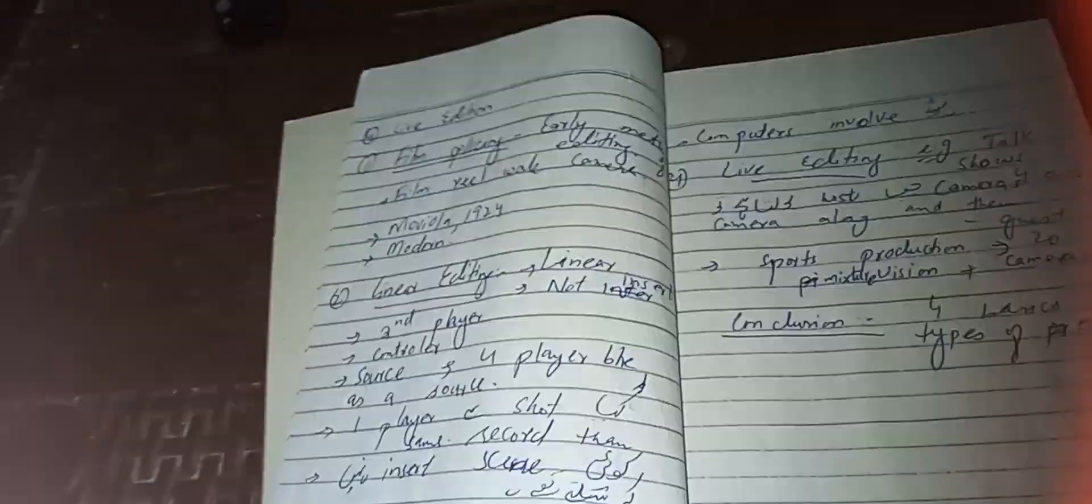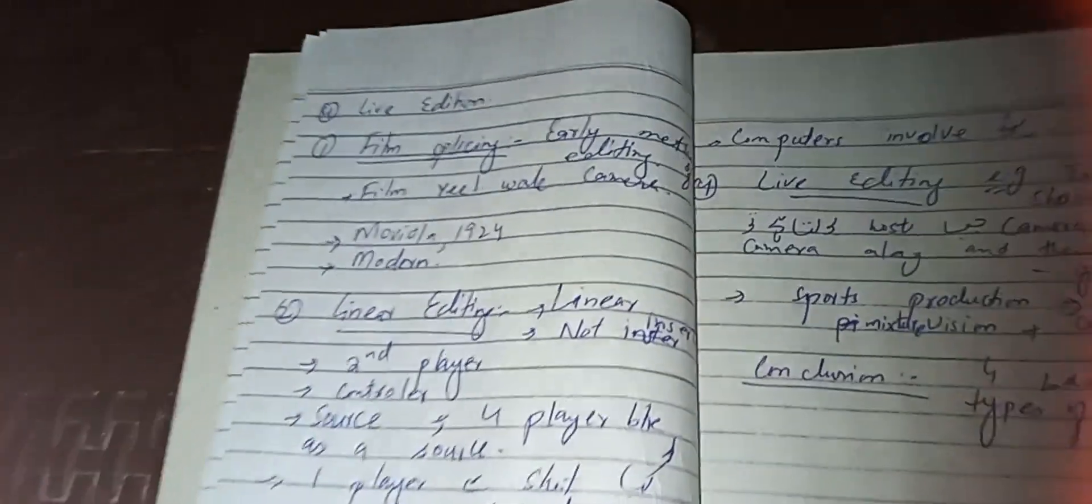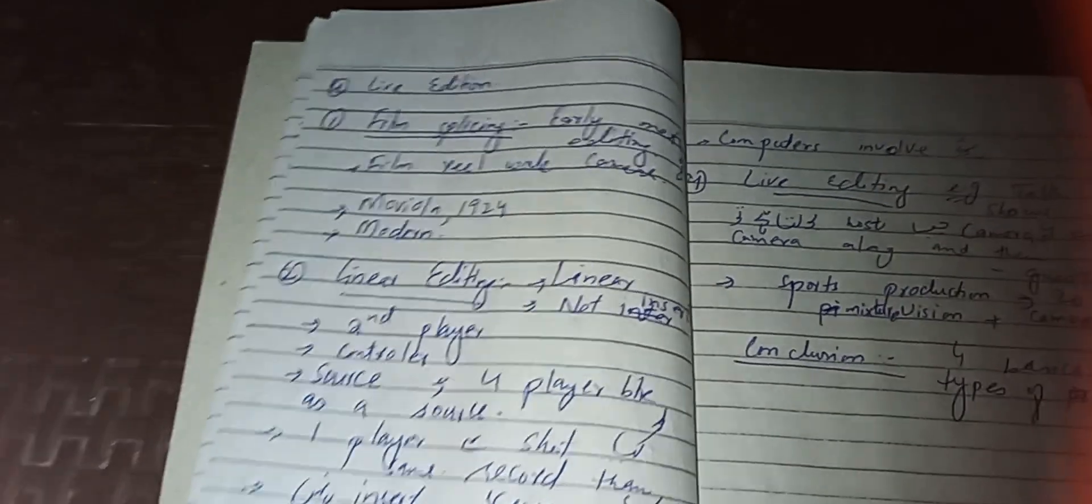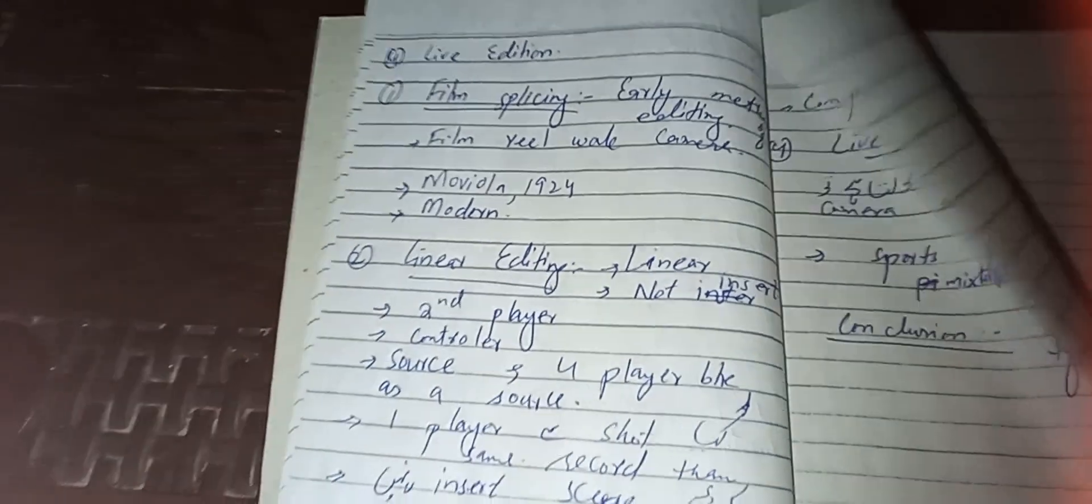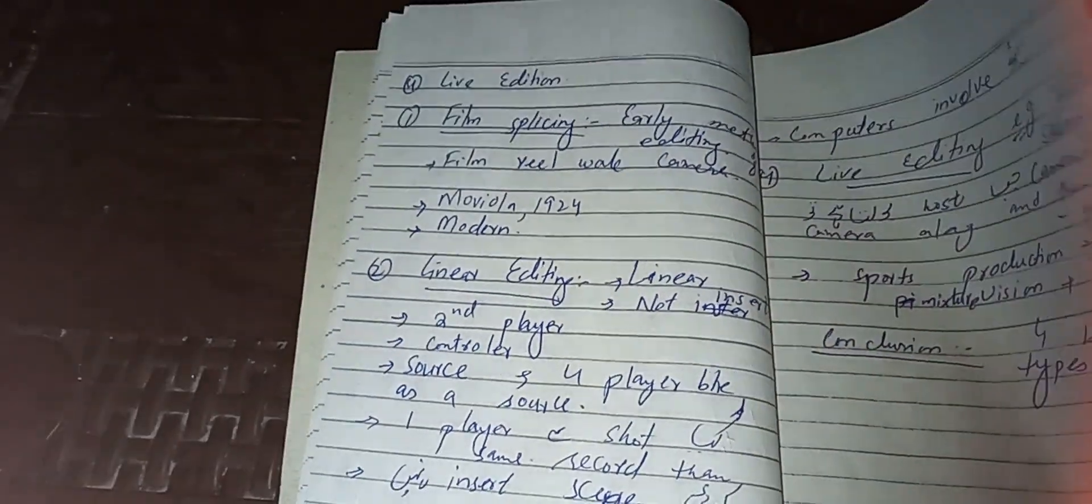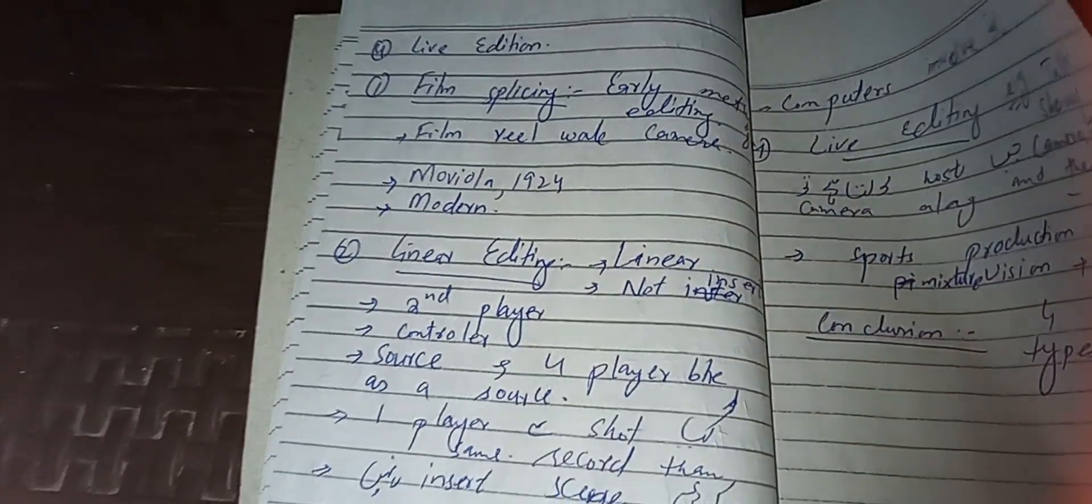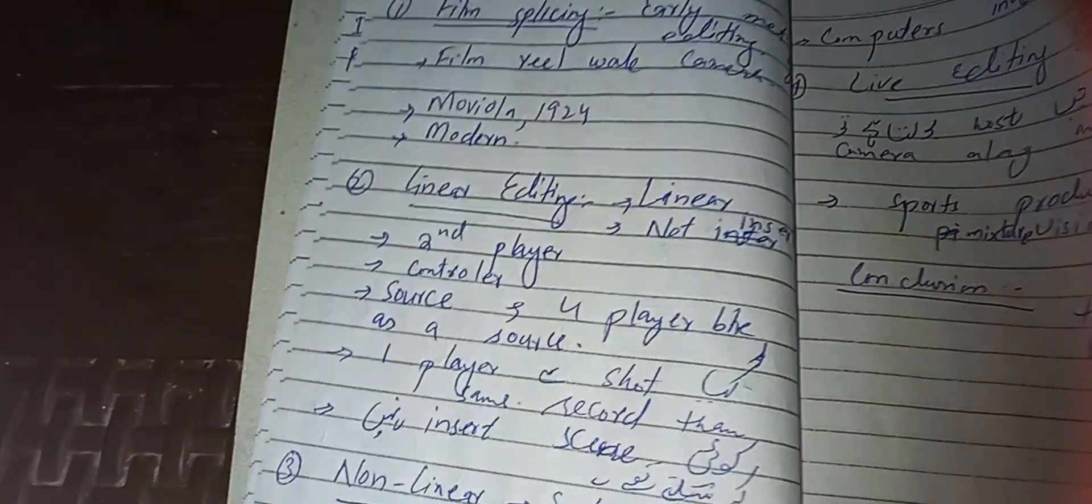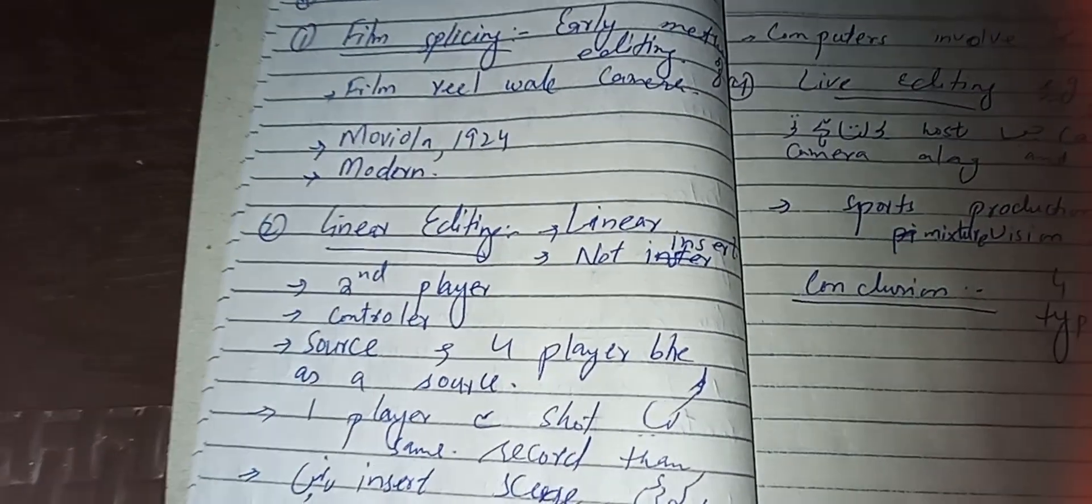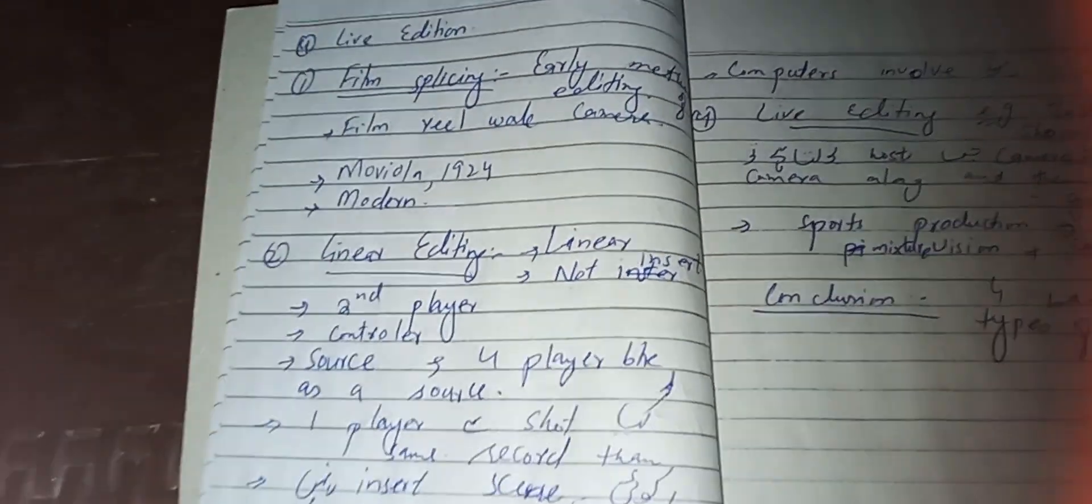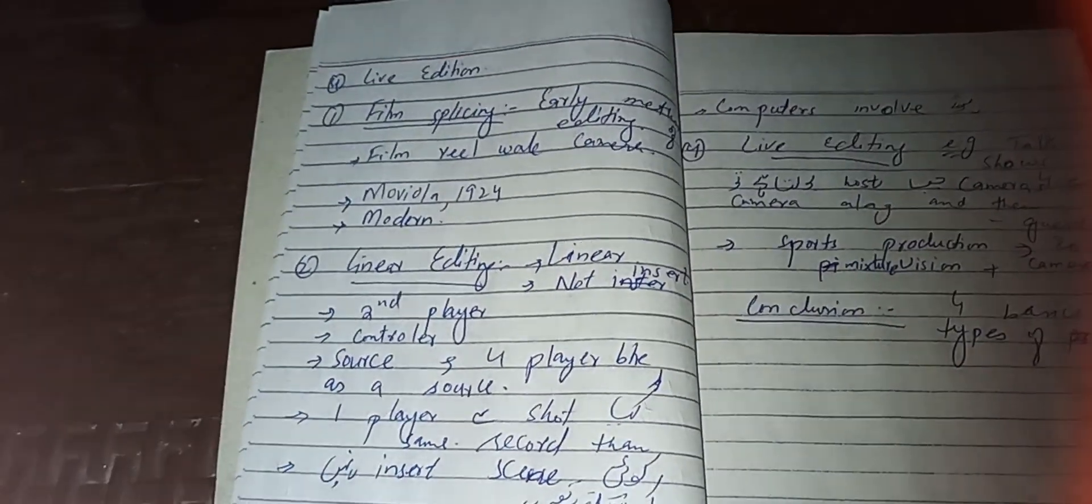Film editing is the type where Movula in 1924 was introduced and modernized. In 1924, film splicing, the material was modern.